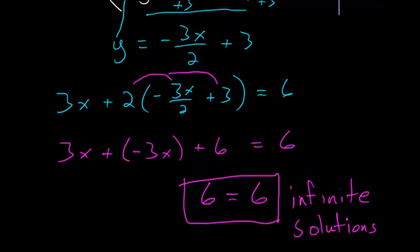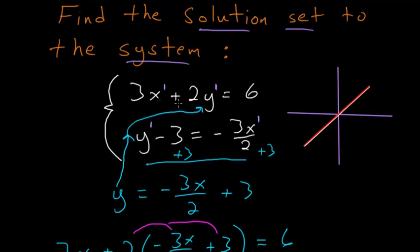And so what we've found, going back up here to the original system, is that these two lines are actually the exact same line. So we get this case where the lines are right on top of each other.